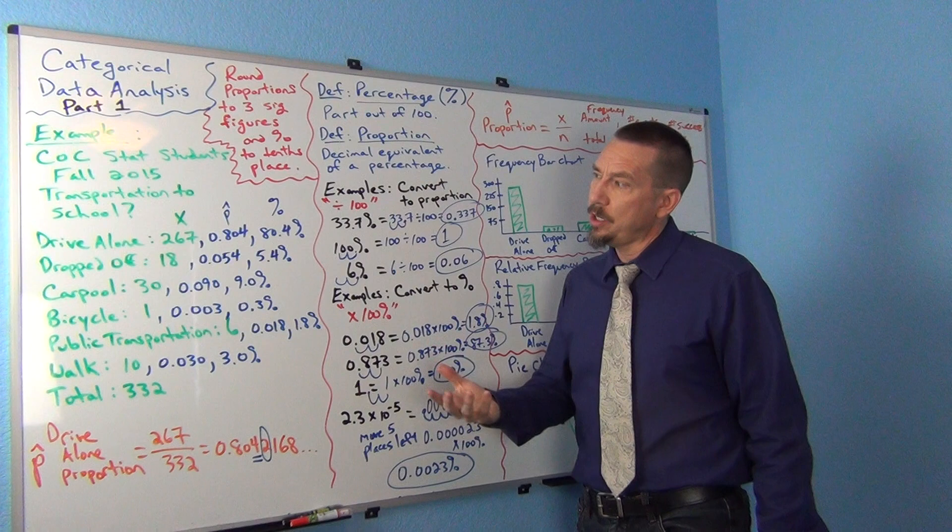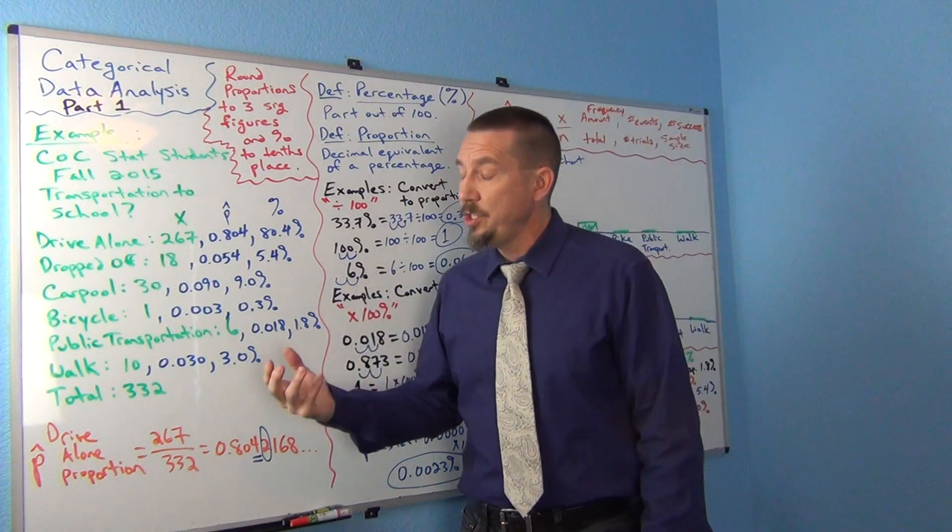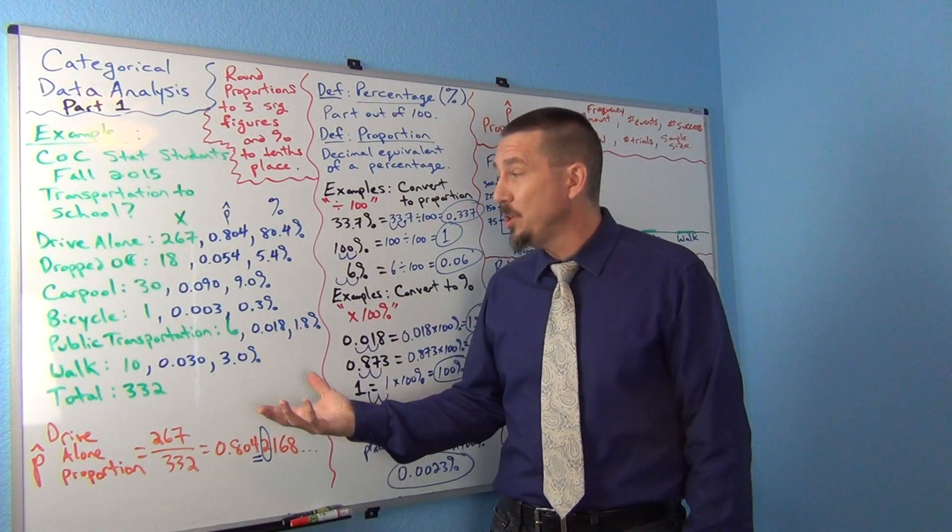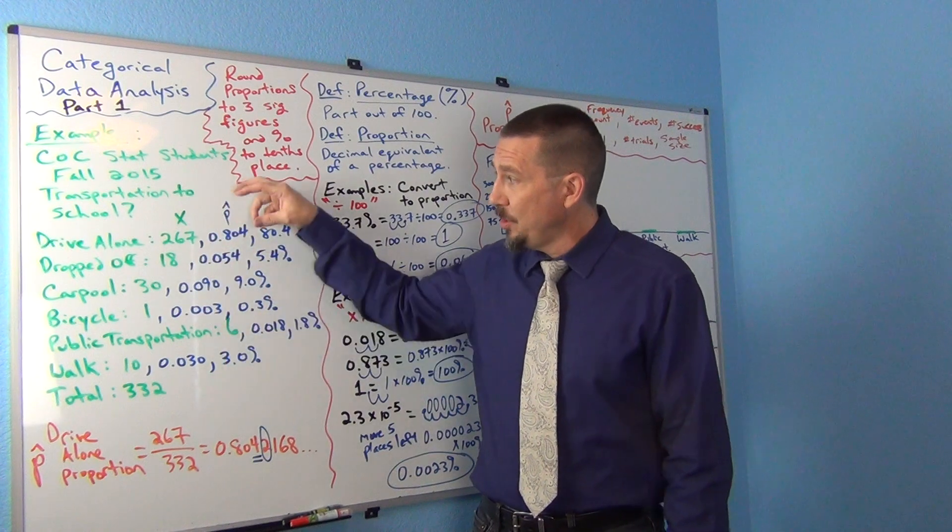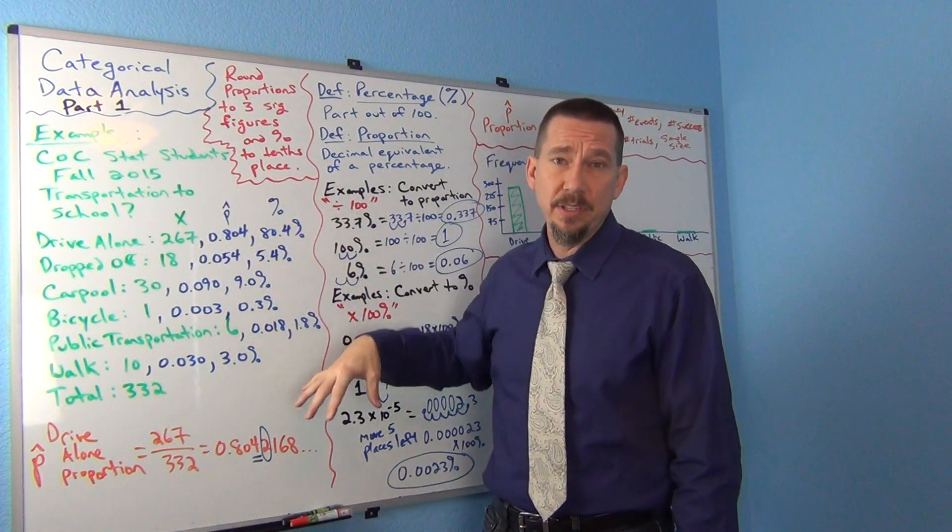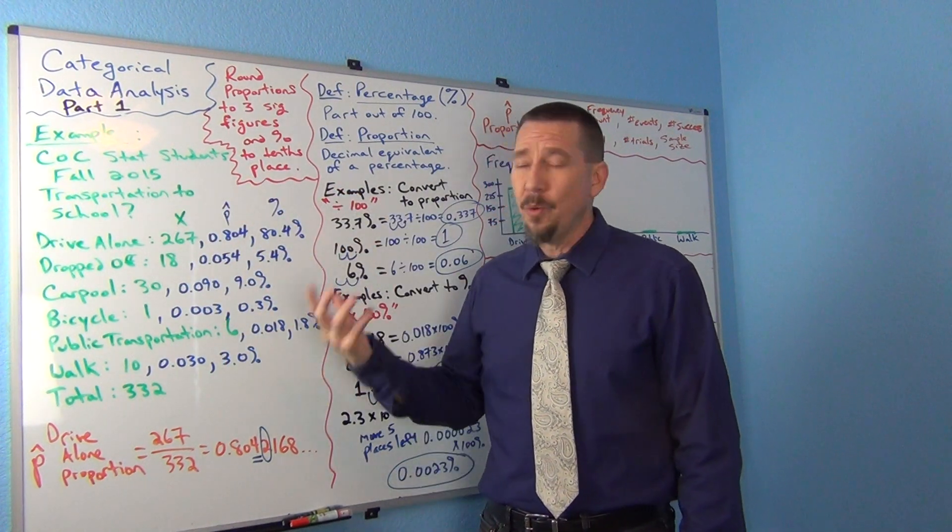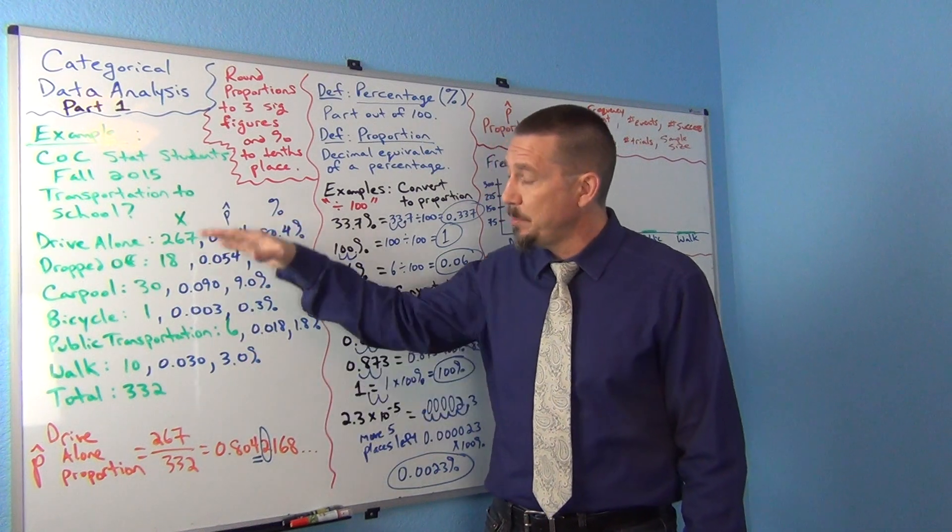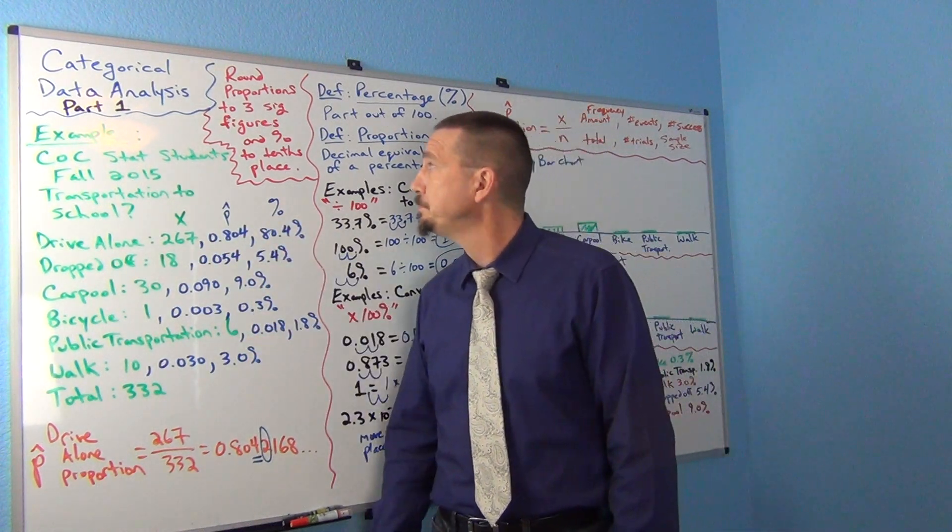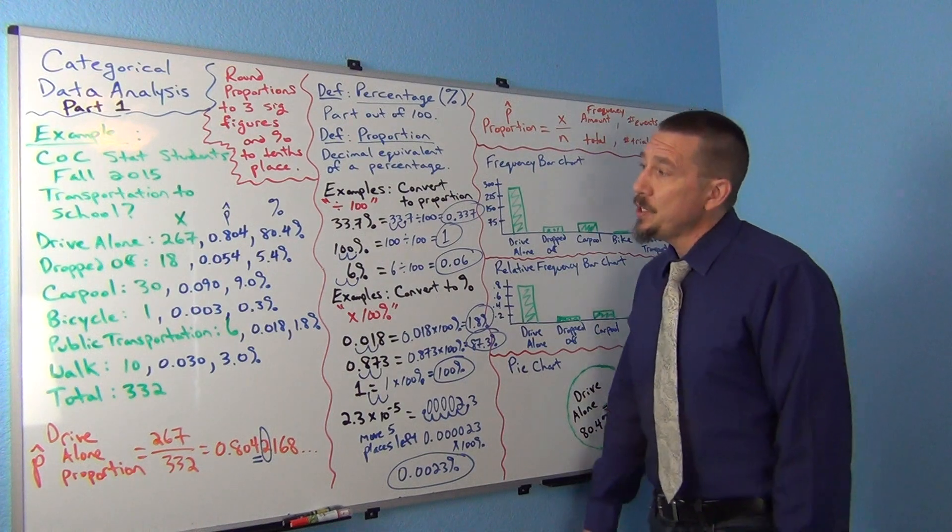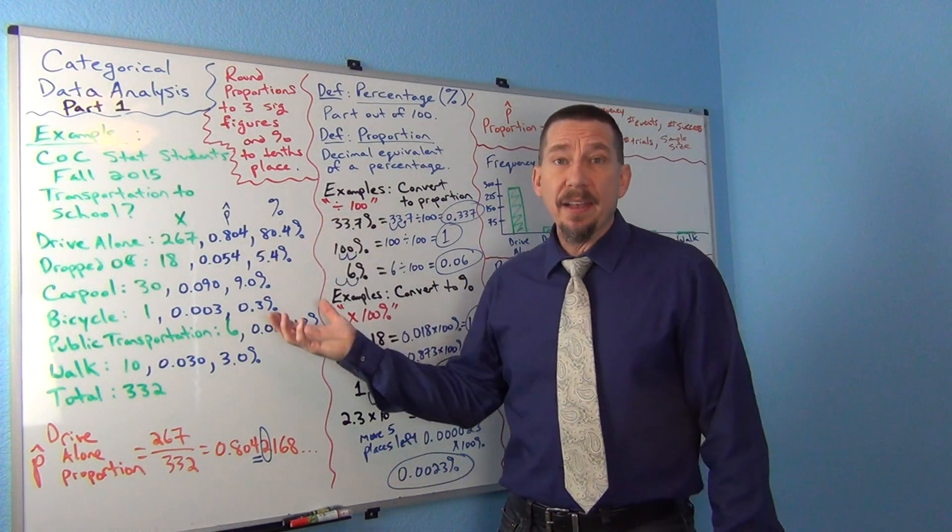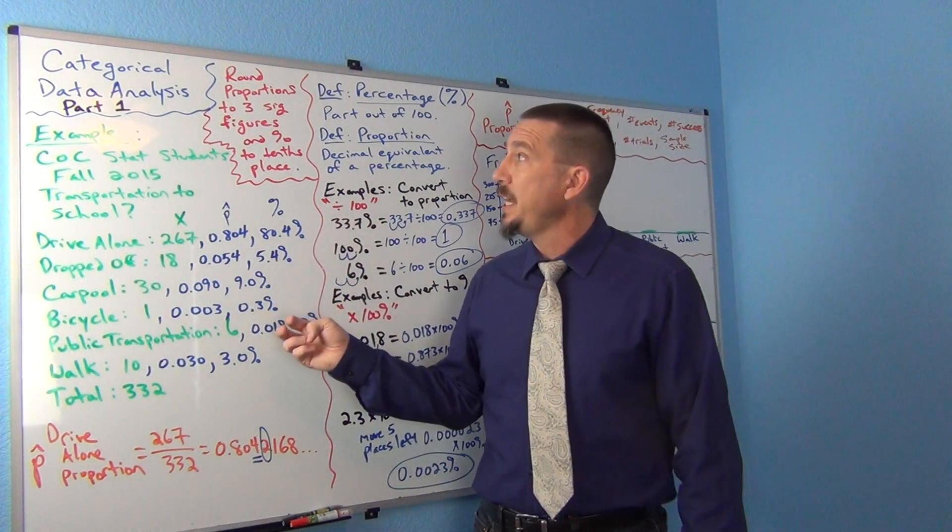So a lot of times when you get categorical data, one of the first things you do is usually put the data into a computer program and then have the computer go ahead and calculate all of this for you. Really you don't want to count these yourselves unless somebody's already counted it for you. Now there's a few different famous graphs that are used in categorical data. One of them, a couple here, so I put them over here.